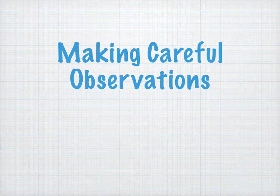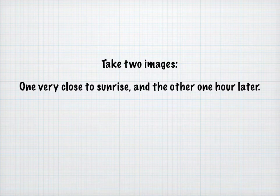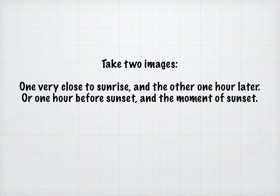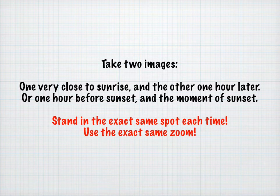Making careful observations, otherwise known as taking a pair of photos. We're going to take two images: one very close to sunrise and the other one an hour later. Or you can take one an hour before sunset and the other at the moment of sunset. Make sure you stand in the exact same spot each time and use the exact same zoom.